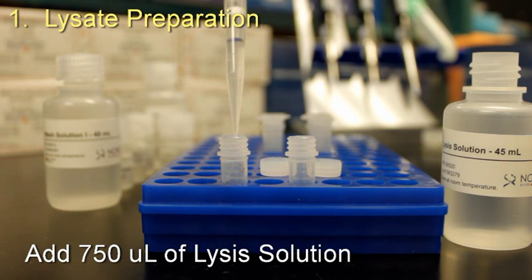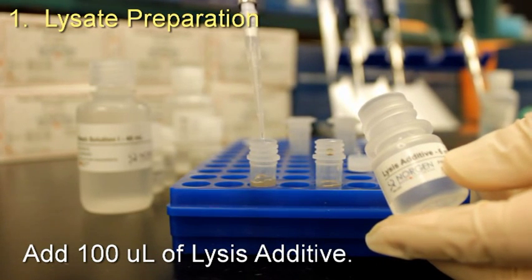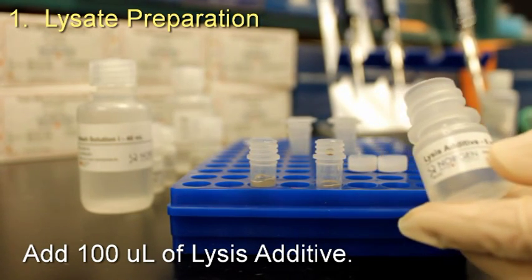Add 750 microliters of lysis solution to each bead tube and vortex briefly to mix. Add 100 microliters of lysis additive to each bead tube.